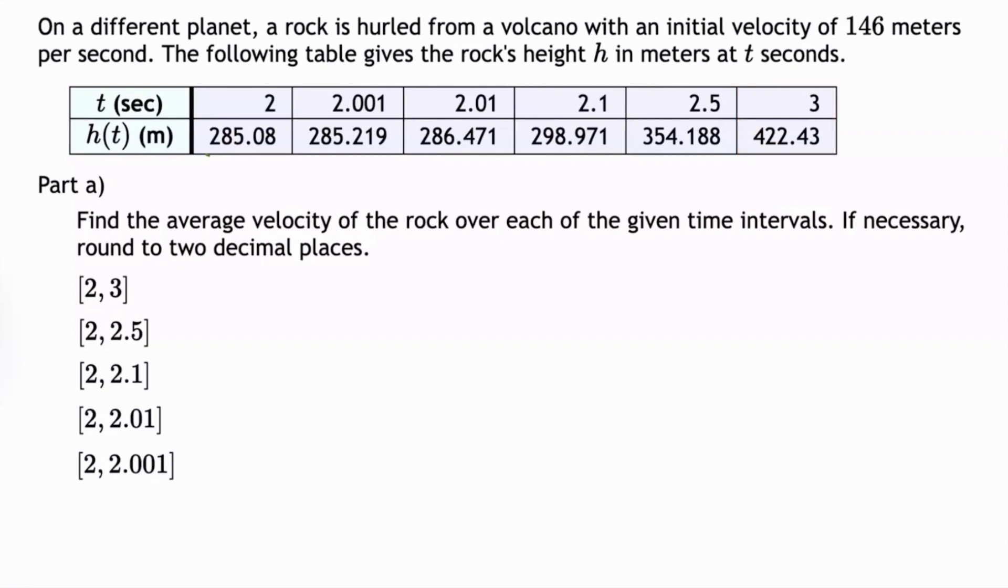In part A, we're asked to find the average velocity of the rock over each of the given time intervals, and if necessary, round to two decimal places. So all the time intervals are closed intervals. The first one is from 2 to 3, the second is from 2 to 2.5, the third is from 2 to 2.1, the fourth is from 2 to 2.01, and the fifth is from 2 to 2.001.